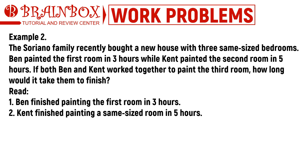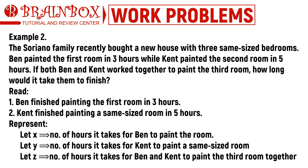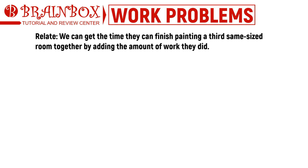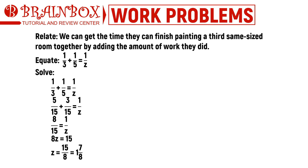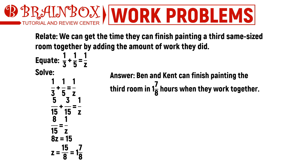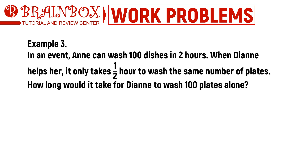From this problem, we know Ben finished painting a room in three hours and Kent finished painting a same-sized room in five hours. We let x = 3 (Ben's time), y = 5 (Kent's time), and z = the time they take together. Using the general formula and solving for z, we get z equals one and seven eighths. Therefore, Ben and Kent can finish painting the third room in one and seven eighths of an hour when they work together.